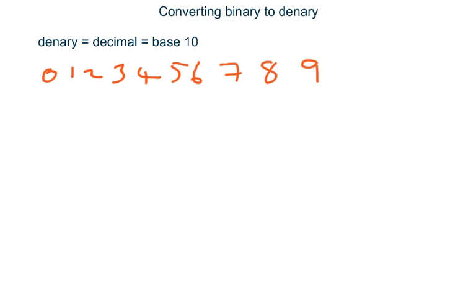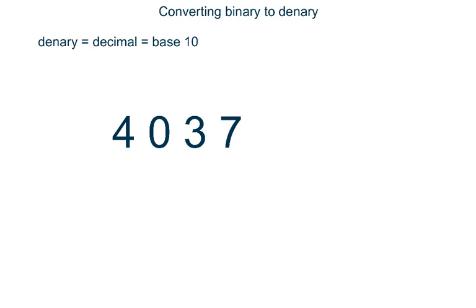We are so used to using denary that we often forget what each of the individual digits within a denary number mean. Let's take this denary number. We all know that it says 4037, but what does each individual digit mean? The digit on the right is how many ones we have. Here we have got 7.